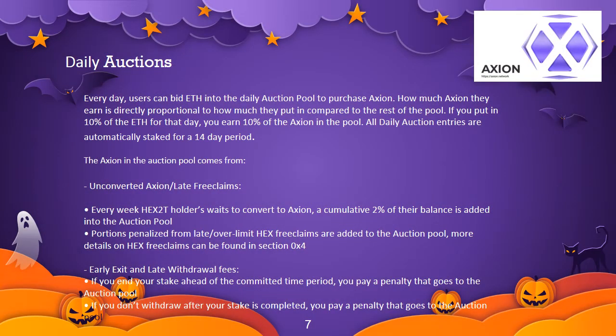The daily auction: putting tokens and value into your pocket. To get AXN, it needs to be claimed by HEX2T holders. The longer they wait to claim, the more penalties they face — about 2% of their total per week. This 2% is added into a daily auction pool where people can bid using ETH on the AXN tokens within it. If you bid 10% of the ETH on that day, you get 10% of the pool rewards. 80% of the ETH paid in the auction is used to purchase tokens, boosting the token price, and those tokens are distributed to stakers, creating a very strong positive feedback loop.